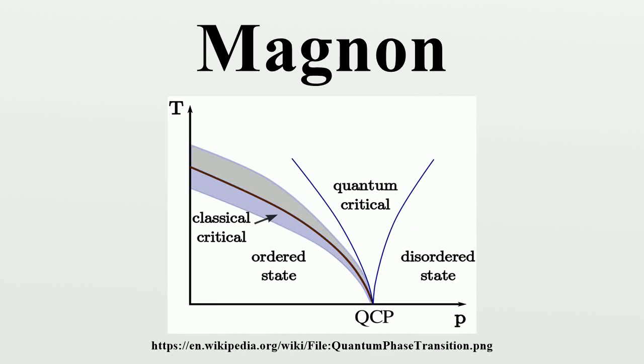A magnon is a quasi-particle, a collective excitation of the electron's spin structure in a crystal lattice. In the equivalent wave picture of quantum mechanics, a magnon can be viewed as a quantized spin wave.